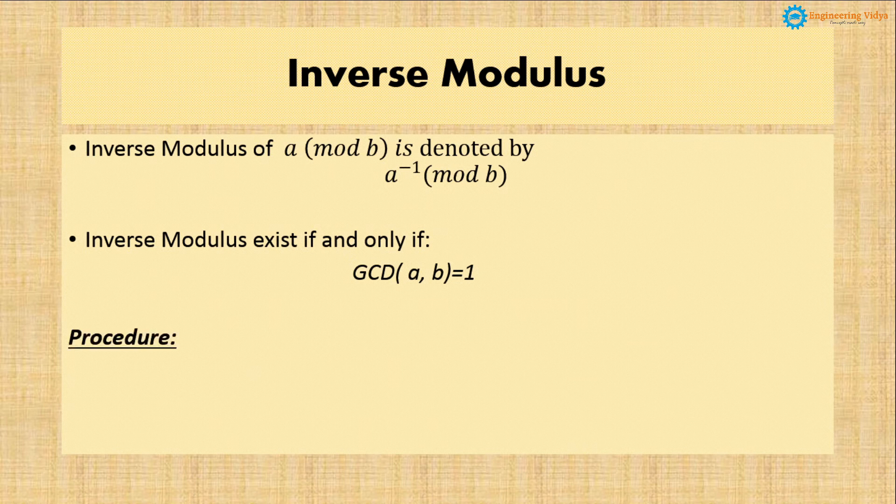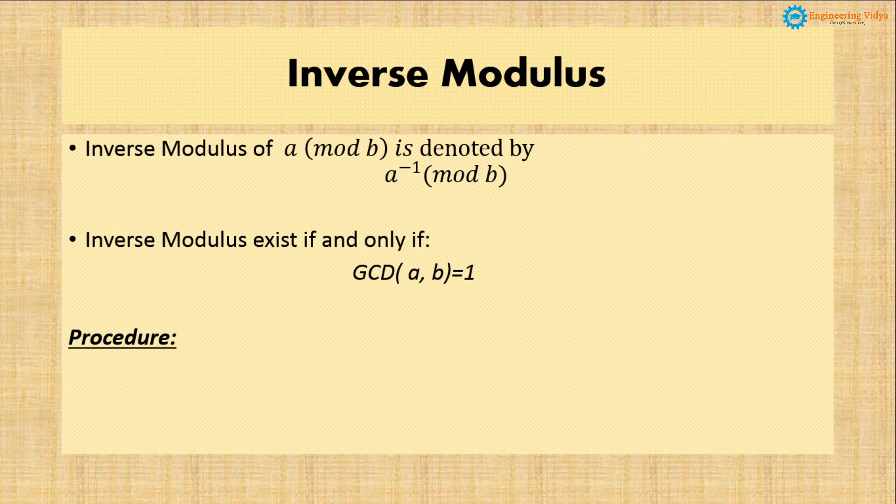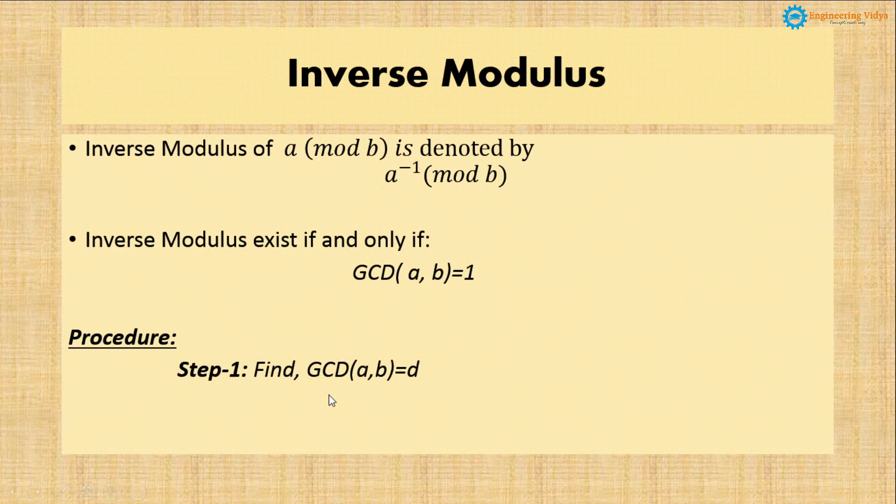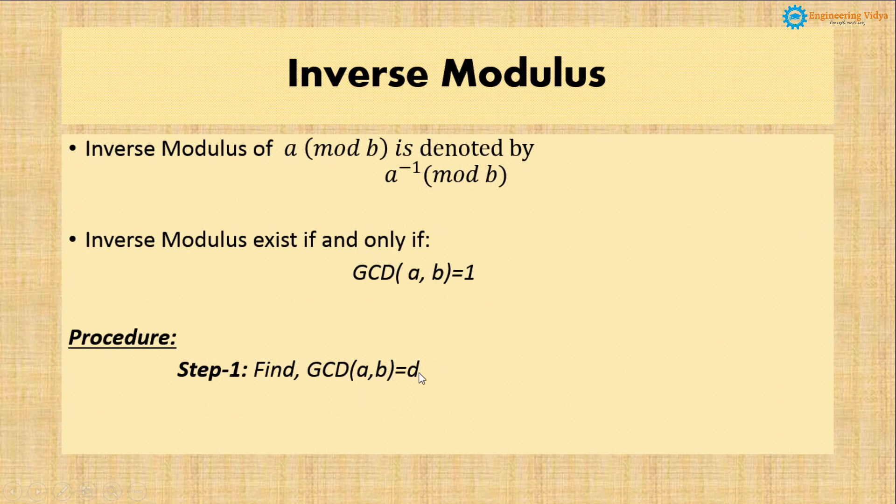Now start with the procedure. In the procedure we will learn how to find inverse modulus. Step 1: Find GCD of a comma b. The GCD of a comma b should be 1. If it is not 1, then we will write that inverse of a mod b does not exist.